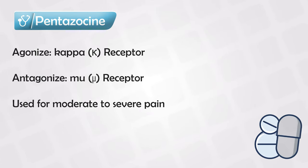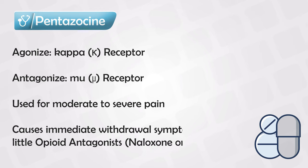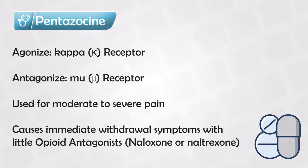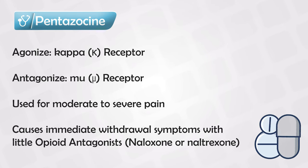If this medication is used with any opioid antagonists, like naloxone or naltrexone, it will cause immediate withdrawal symptoms, and it makes sense because you will have two antagonistic effects — one of pentazocine and the other of the antagonistic medication.